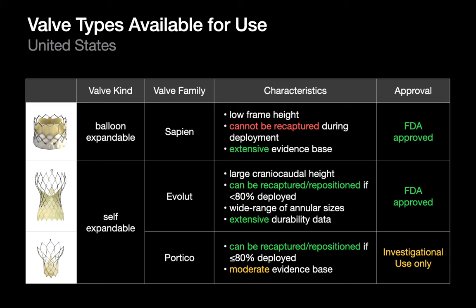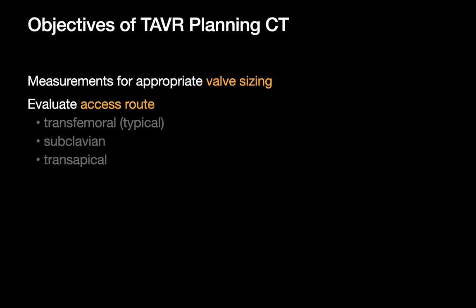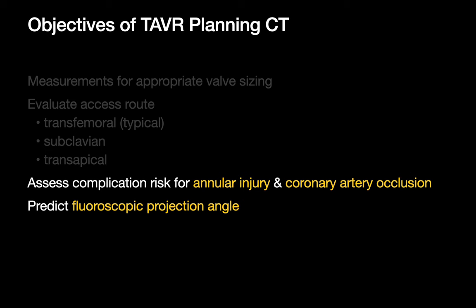Several crucial steps must occur during the planning before a TAVR procedure, and one of these is the anatomic assessment of the patient on CT imaging to help determine the appropriate type and size of valve to deploy and evaluating the access route for its insertion. Appropriate sizing matters because paravalvular leak is a strong predictor for higher mortality. CT imaging also helps assess the risk of complications such as aortic annular injury and coronary occlusion, and can predict fluoroscopic projection angles that will provide orthogonal views of the aortic valve in the lab.